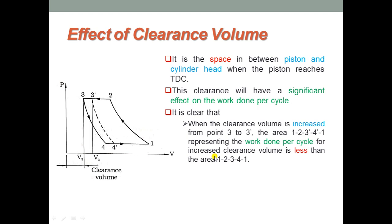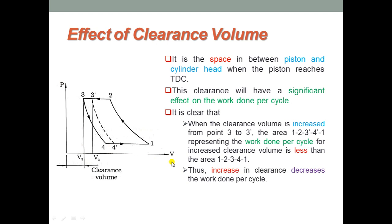To repeat: when the clearance volume is increased from C3 to C3 dash, the area 1-2-3dash-4dash-1 representing work done during that cycle is less than the area 1-2-3-4-1. That means the net work done for cycle 1-2-3dash-4dash is less when compared to the work done of 1-2-3-4-1. Ultimately, an increase in clearance volume results in a decrease in work done per cycle.